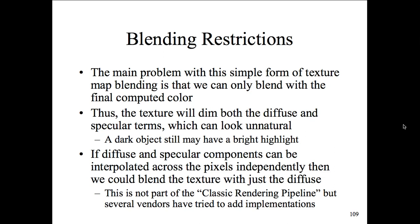If the diffuse and specular components can be interpolated across pixels independently, you can blend the texture with just the diffuse without worrying about highlighted areas. That's not part of the classical rendering pipeline, but several vendors have added implementations for different blending techniques, so you'll usually see different blending options in various packages.